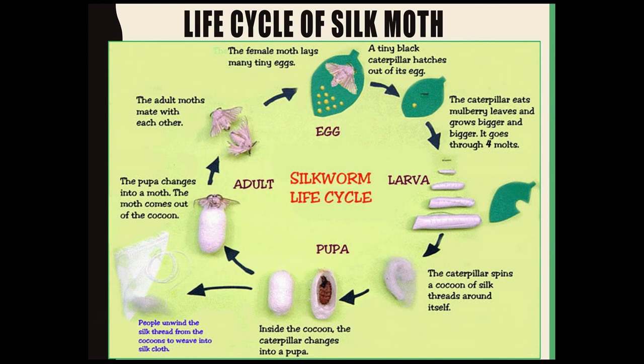Now let us talk about the life cycle of the silk moth. The life cycle of the silk moth can be divided into four stages: the first stage is when they lay the eggs, the second stage is the larva stage, the third stage is the pupa stage, and the fourth is the adult stage.